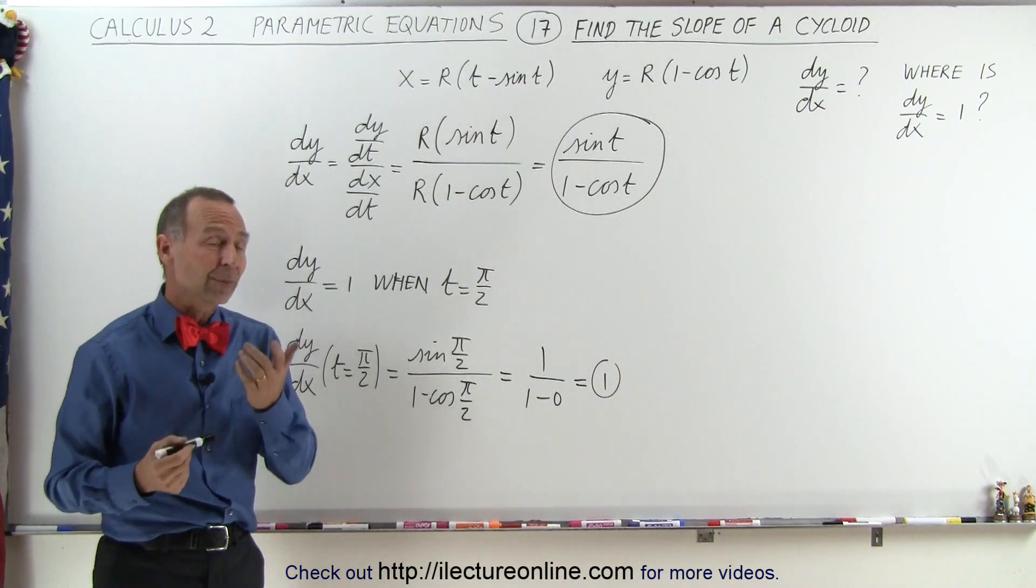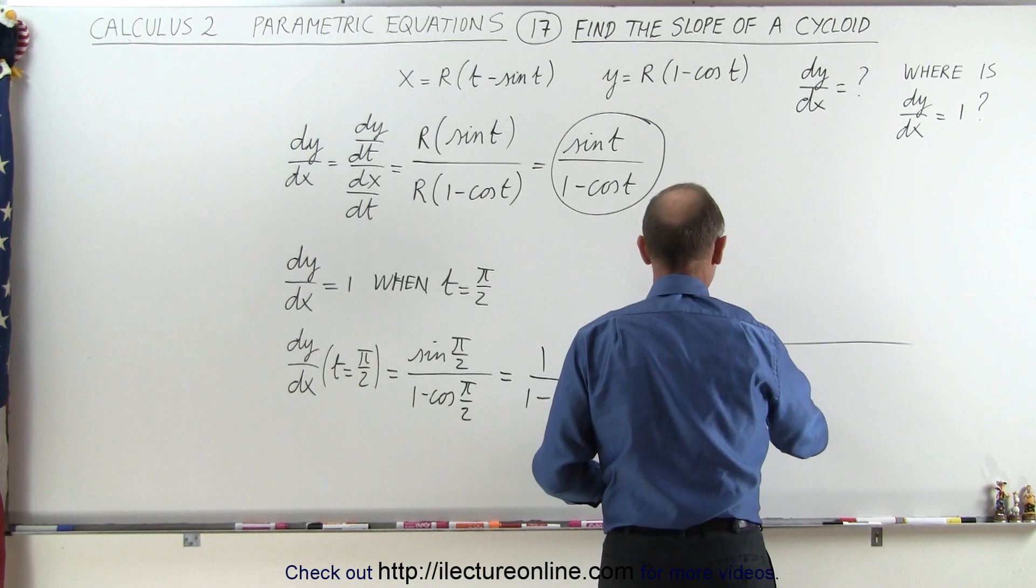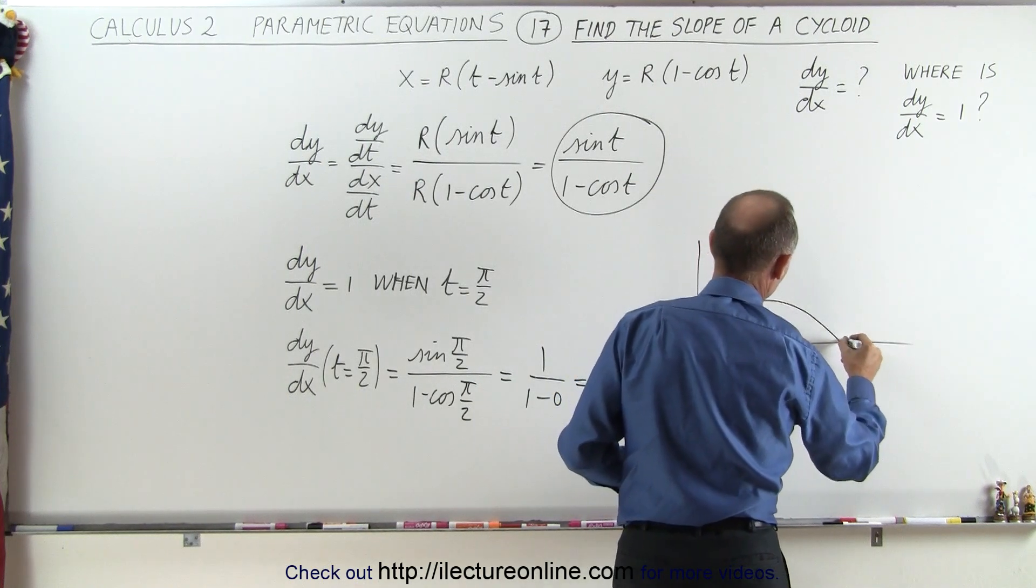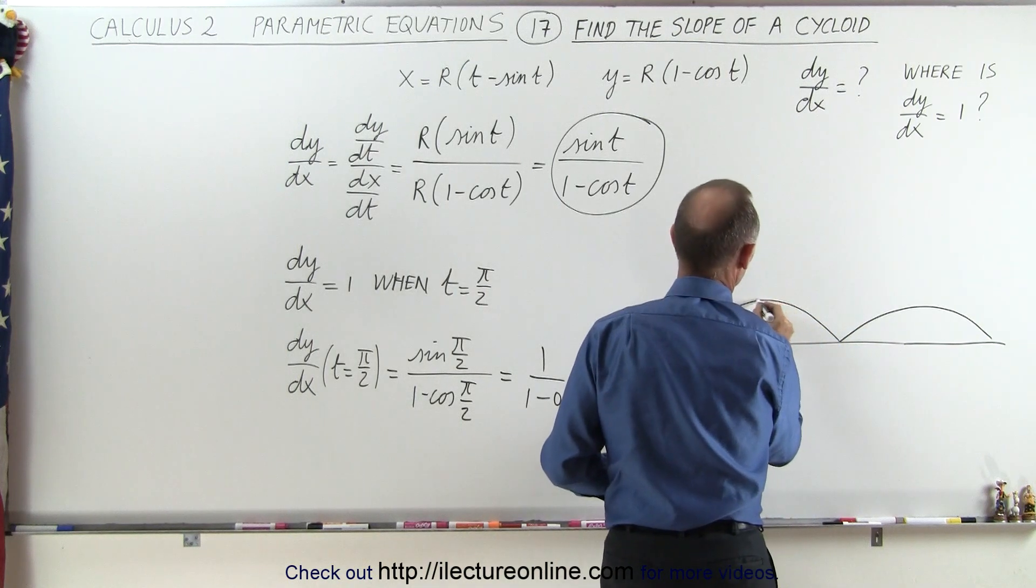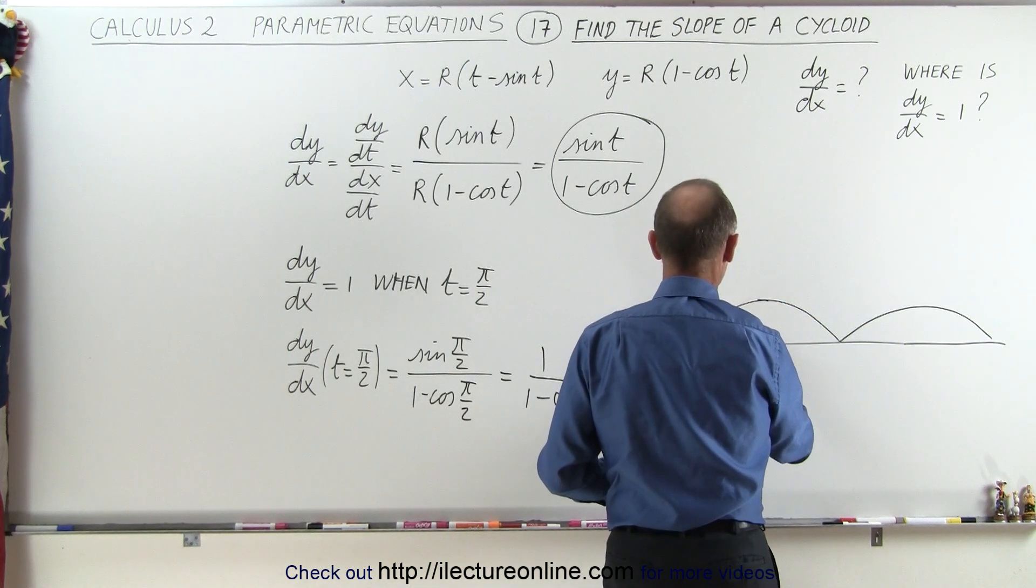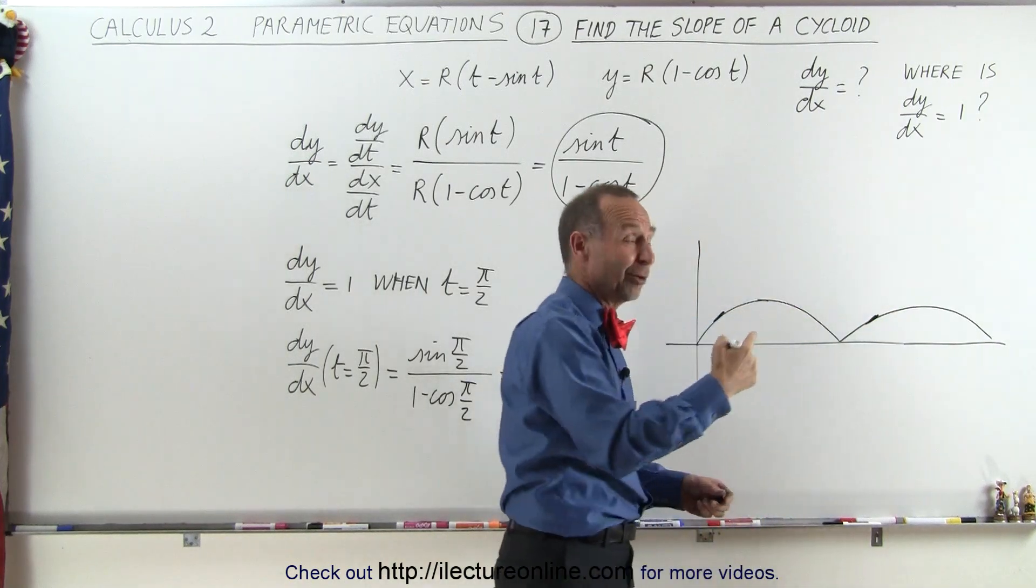And that makes sense when we think about the cycloid because the function of the cycloid, the graph looks like this. So you can see that the slope can only be equal to 1 at this location here and this location there, not at the top because that's where the slope is equal to 0.